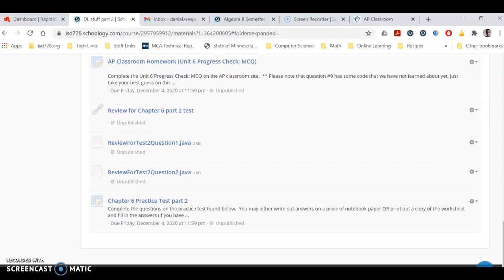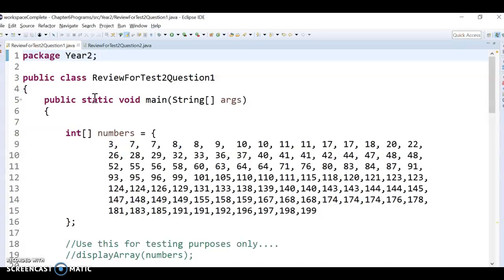All right, in this video we are going to be continuing our review for the Chapter 6 Part 2 test and we are going to do some coding together. The file that you'll need to get started here is review for test2 question 1.java. It should be on the folder for today. So if you want to click on that and get the code into Eclipse, it should look like this.